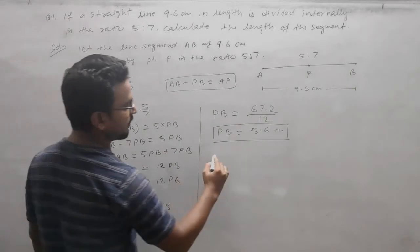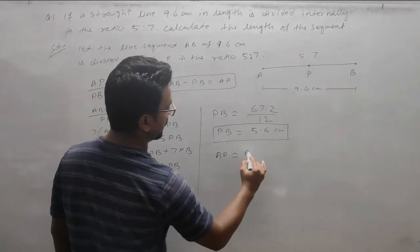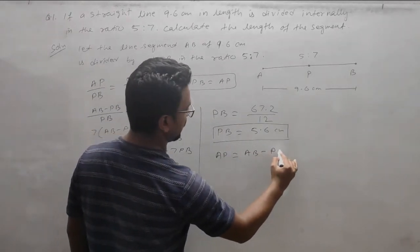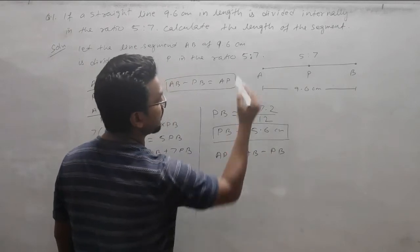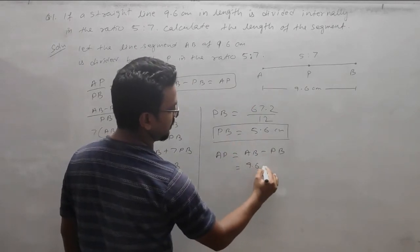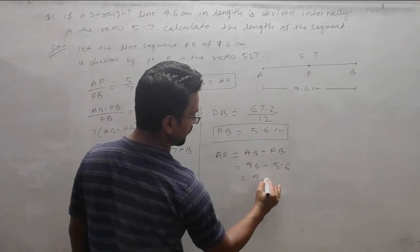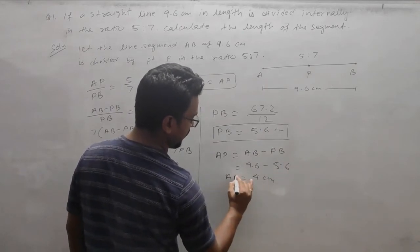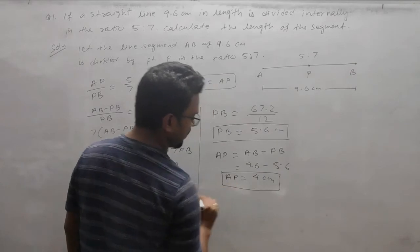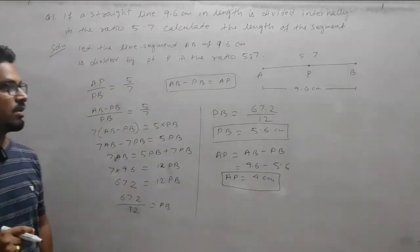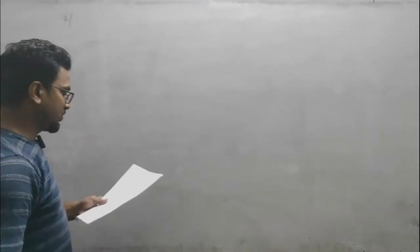To find AP: AP = AB - PB = 9.6 - 5.6 = 4 centimeters. So internally we can divide in this way. Next question: a straight line 'a' centimeters in length is divided at a point in the ratio m:n.